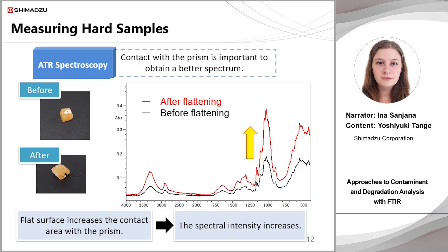Two spectra are shown here, before and after flattening. Compared to the spectrum before flattening in black, the spectrum in red demonstrates that contact between the sample and prism was improved by flattening. The contact area with the prism has increased and with it the intensity of the spectrum. If the intensity of the spectrum is high, small peaks can be observed and the influence of noise is relatively small, so the overall accuracy of qualitative analysis is improved.